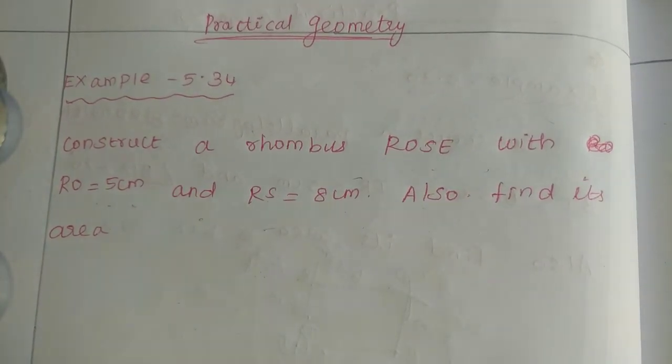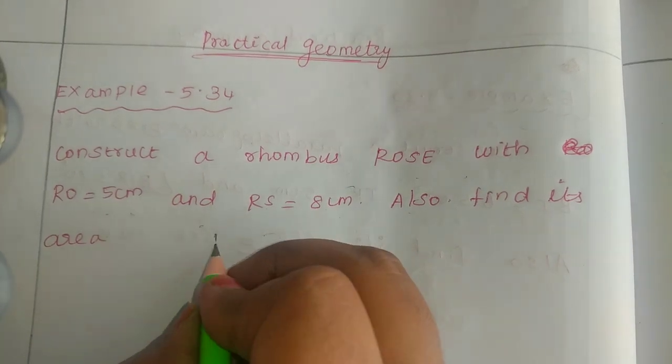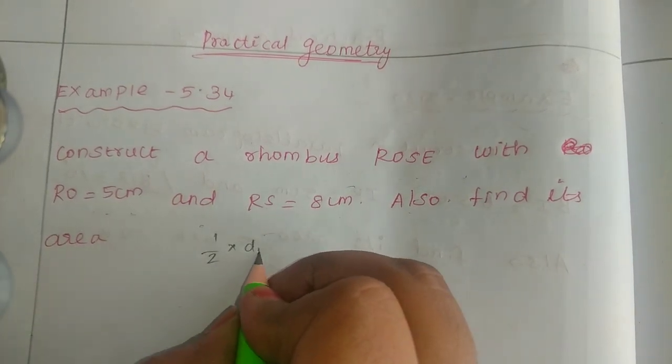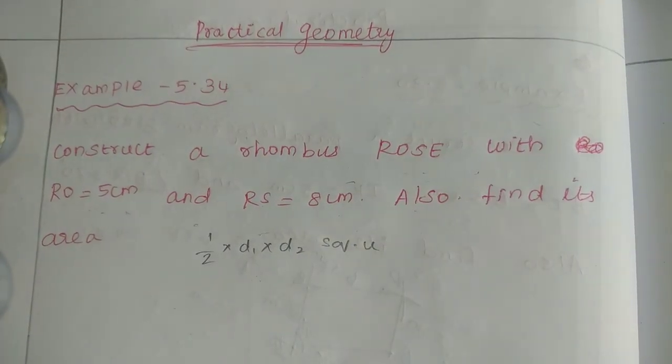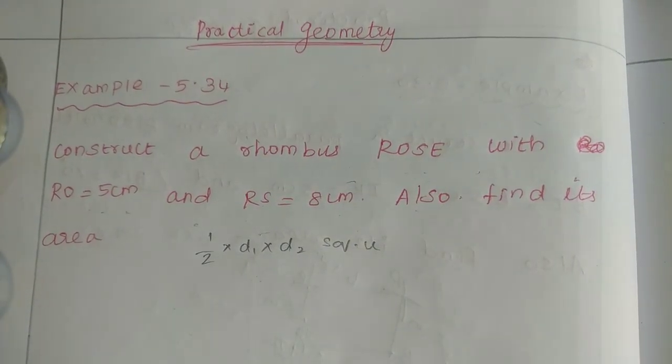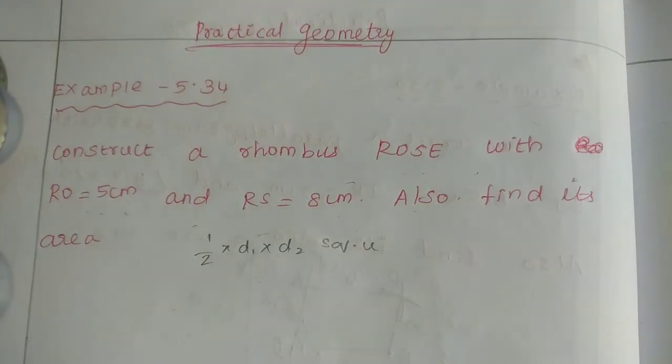Rhombus. The formula for area of rhombus is half into d1 into d2 square units. So this is the formula: half into d1 into d2 square units.